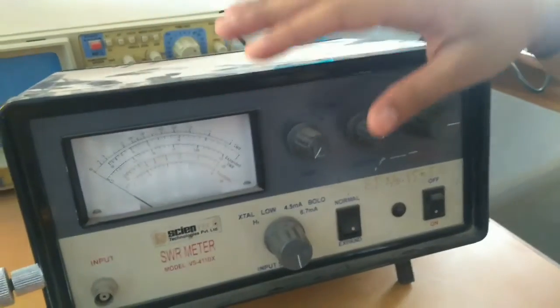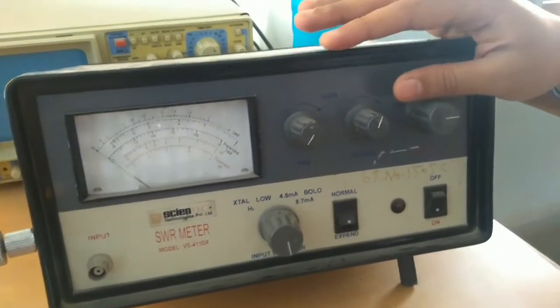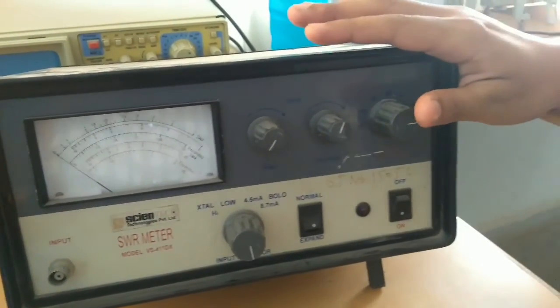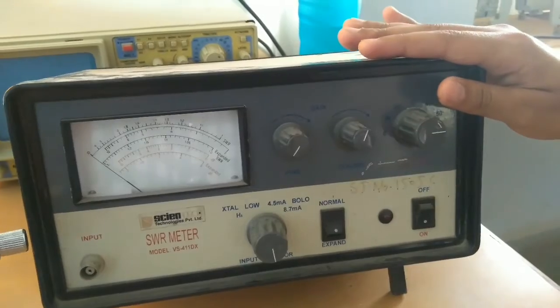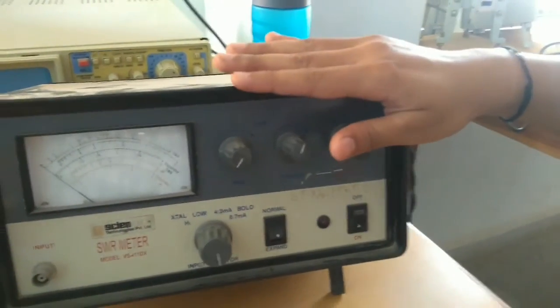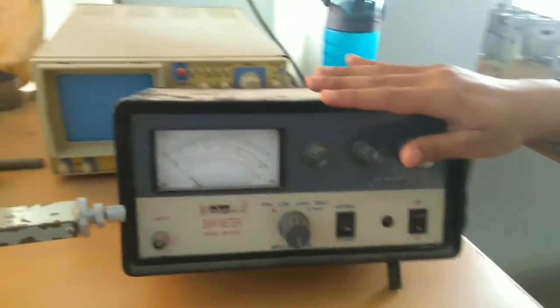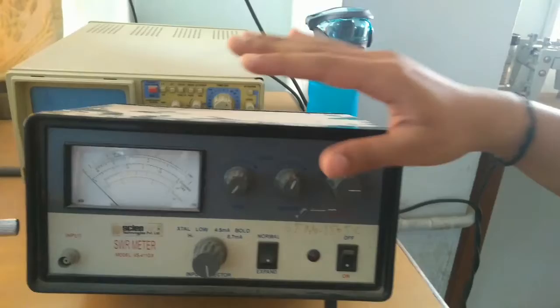SWR meter is voltage standing wave ratio. It is the ratio of voltage at the maximum and minimum points. The SWR meter is a high gain tuned amplifier operating at a fixed frequency of 1 kilohertz. It is designed primarily for use in conjunction with a suitable detector.